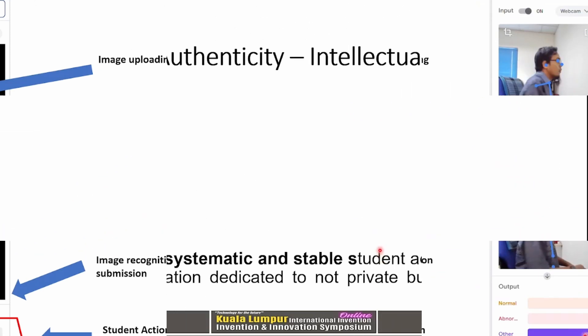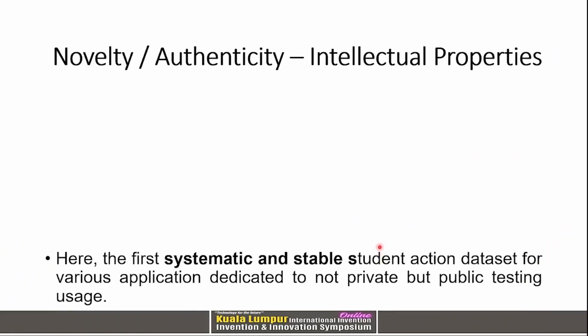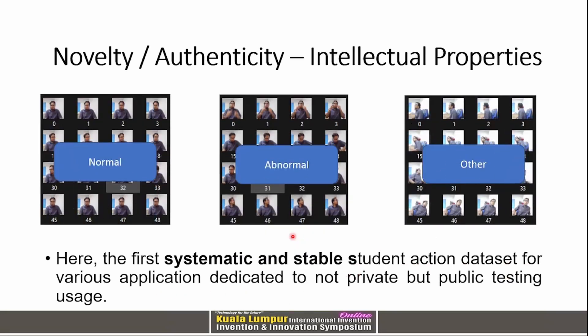Regarding novelty and intellectual properties, we propose a symmetric stable student action dataset for various applications. This includes three action classes: normal — standard student actions; abnormal — where the student raises their left hand or shoulder; and other — where the student stands up or moves left or right.